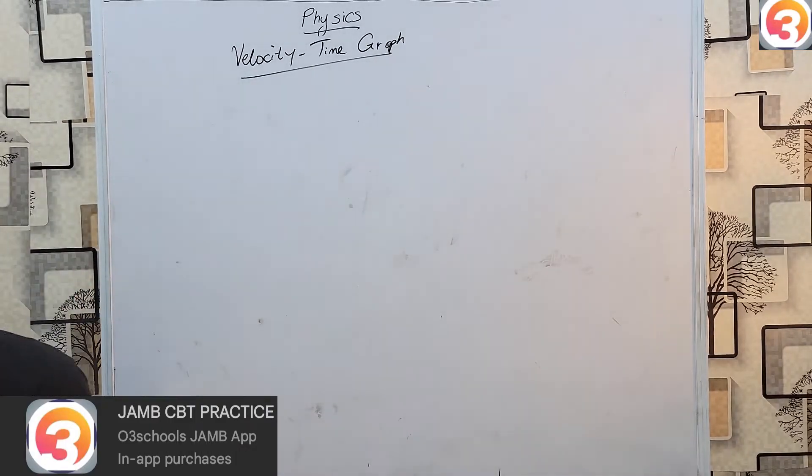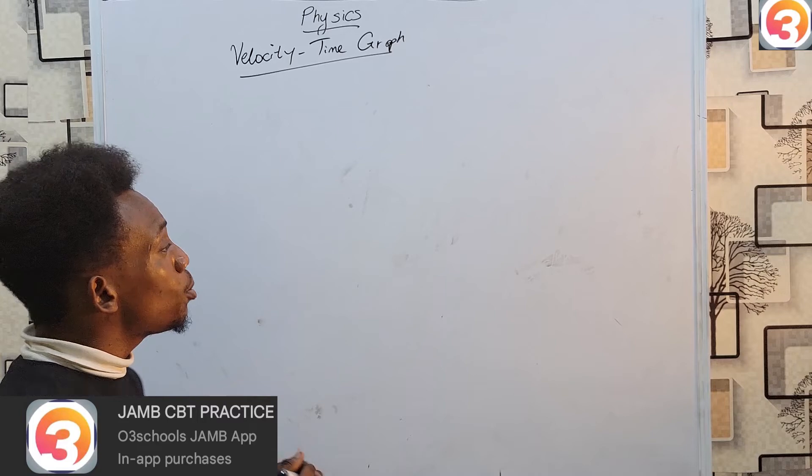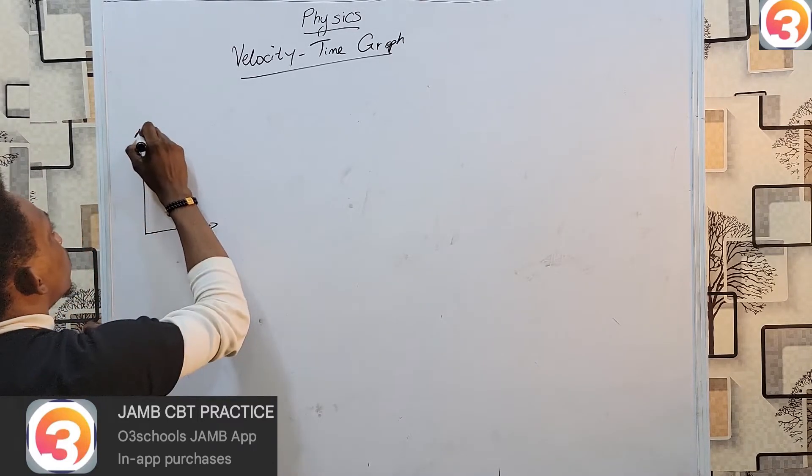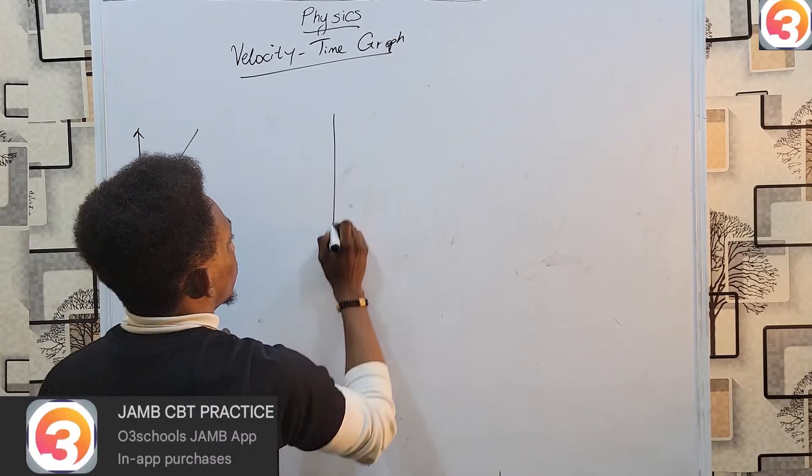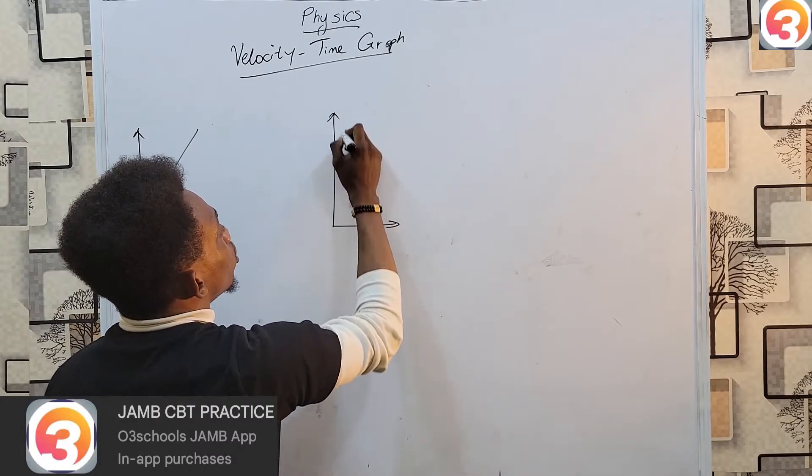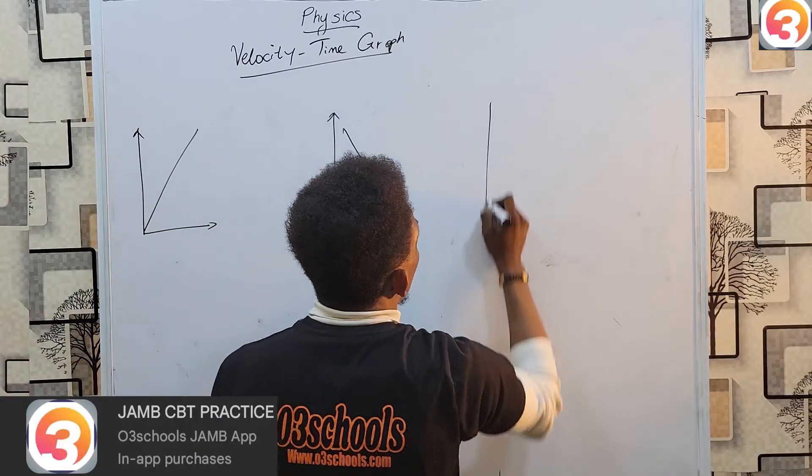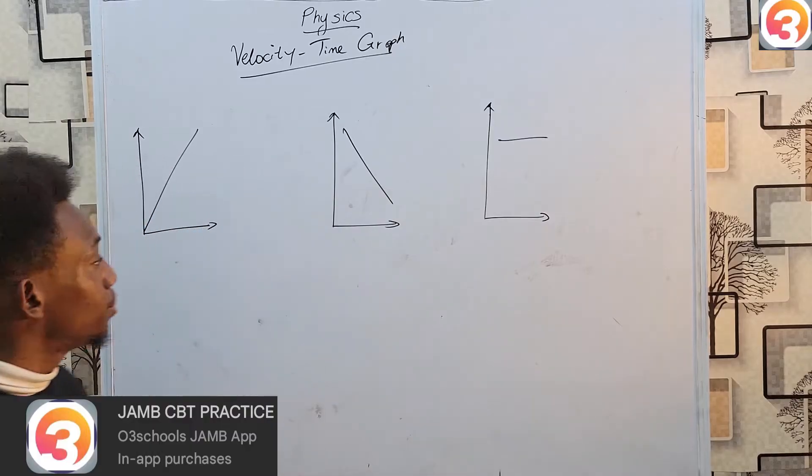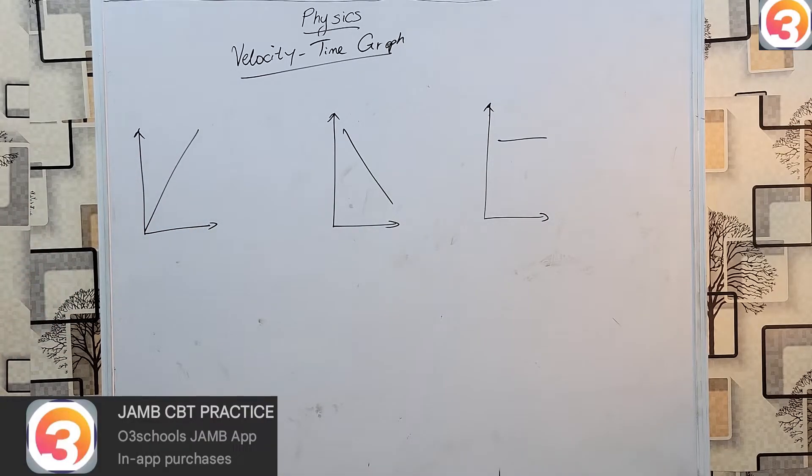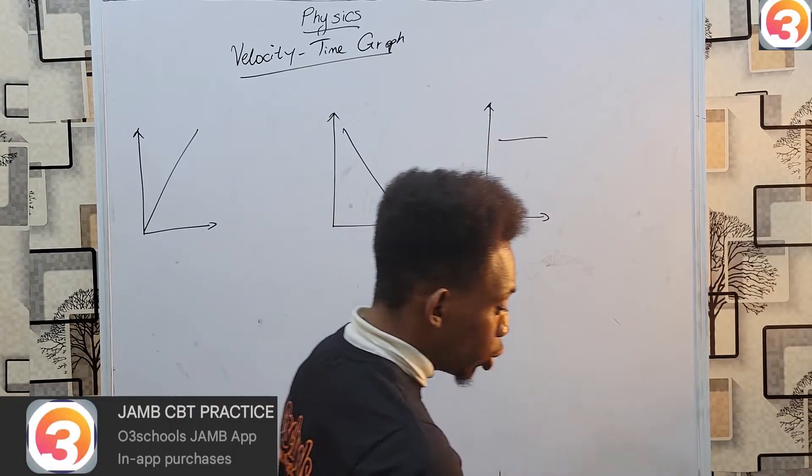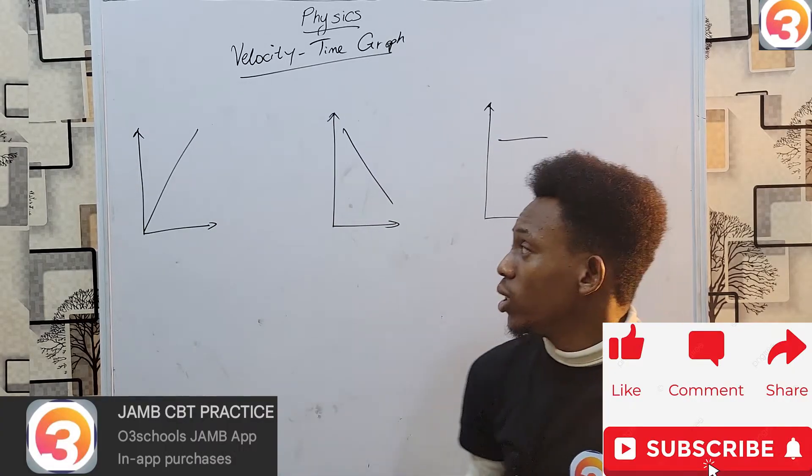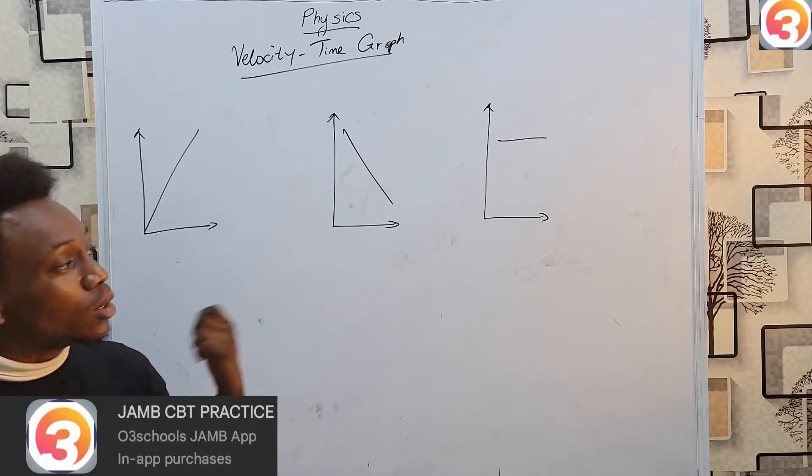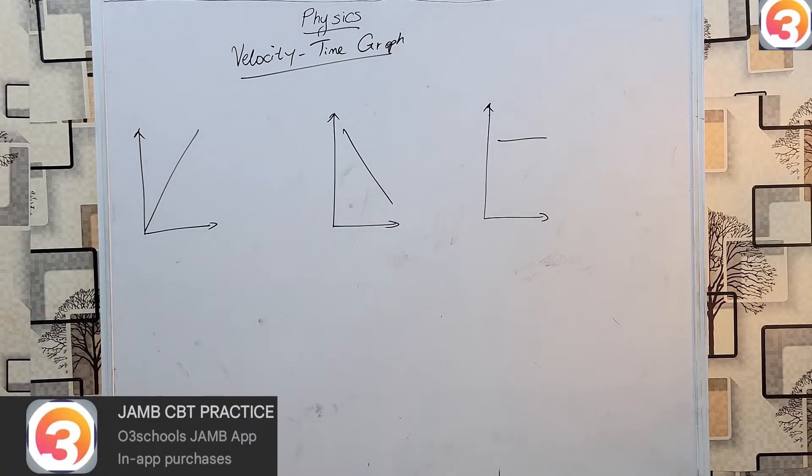Velocity time graph, while moving in different manner, is always made up of three different types of lines. Either a line sloping upwards, a line sloping downwards, or a line moving horizontally, no slope. There are three types. If the line is sloping upwards, that has acceleration, sloping downwards, that has retardation, and moving perfectly horizontally, that is uniform velocity or constant velocity.